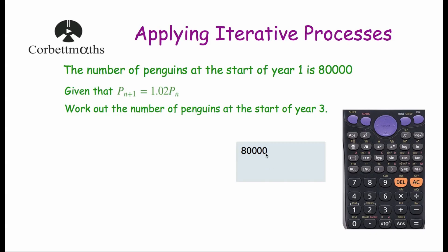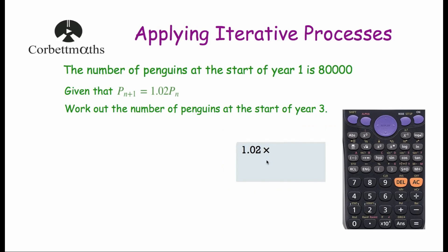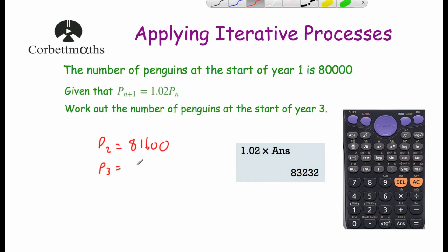If you type in 80,000 into your calculator and then press equals, it will appear on your display. Then type in 1.02 multiplied by ANS — that will use that 80,000 — and press equals, and it will tell us the number of penguins at the start of year 2, which is 81,600. If you just press equals again without typing anything, because your answer is now 81,600 and you're about to do 1.02 times ANS, it will give you the next answer — the number of penguins at the start of year 3. You can just keep pressing equals and it will keep telling you the number of penguins at the start of the next year. That ANS button can be really useful whenever you're using iterative processes.